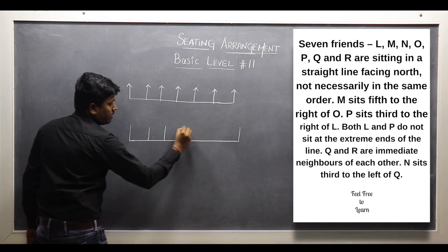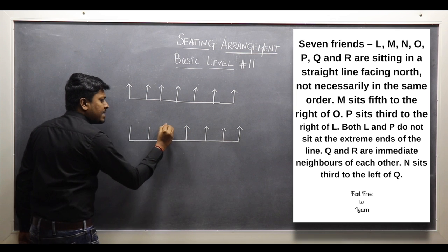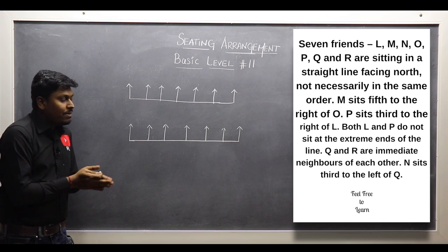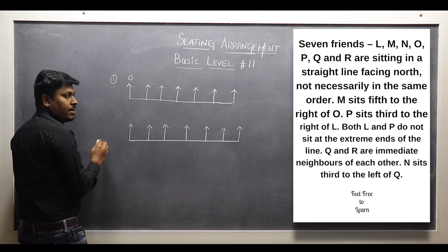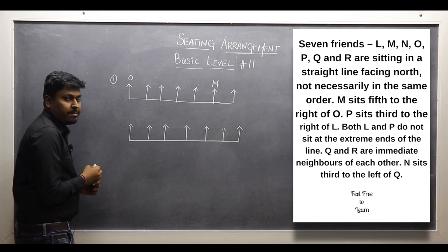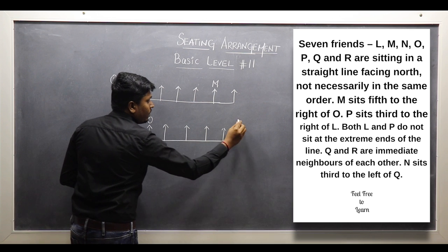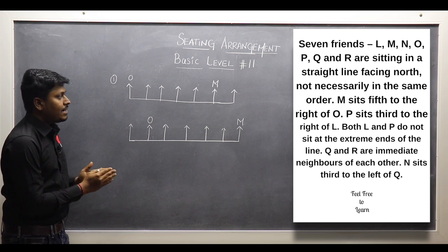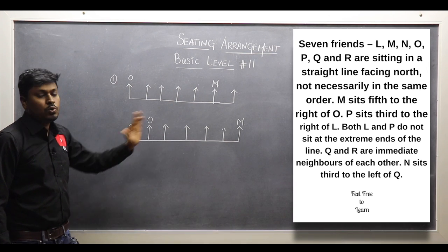So in the first possible diagram, I fix O at position 1, then O's right hand side: 1, 2, 3, 4, 5 — so this will be M. In the second possible diagram, if I fix O at position 2, then O's right hand side: 1, 2, 3, 4, 5 — this will be M. So in both diagrams we have fixed O and M with M sitting 5th to the right of O. If O is placed any further right, we cannot place M, so we go with only these 2 possible diagrams.